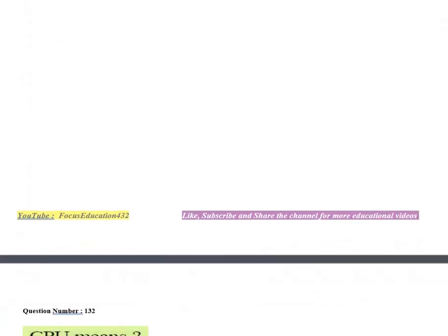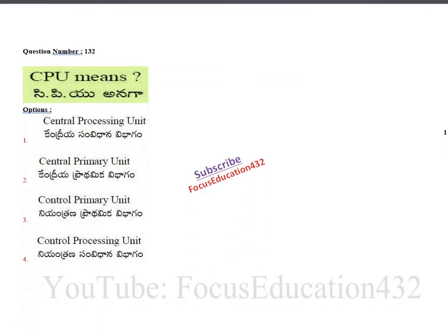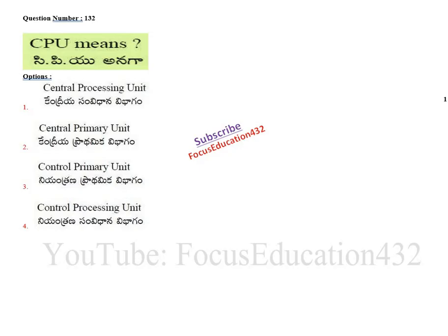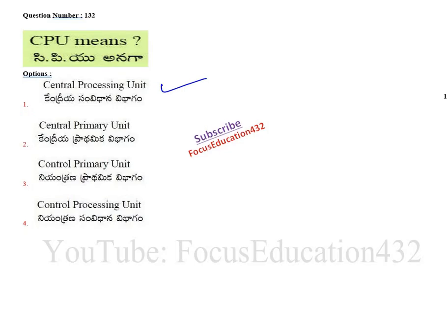Next question: what is the full form of CPU? It is also known as the brain of the computer. CPU stands for Central Processing Unit — the most important part in the computer.